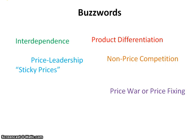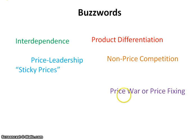Price war or price fixing is illegal. If you have somebody who's trying to break into the industry, you'll have the oligopolies lower their prices really beyond even what the cost is in order to make the good, in order to try to deter these people from the industry or keep them out. It's illegal — the government regulates it because that doesn't allow for competition, and so the antitrust laws don't allow firms to have this price fixing or price war.